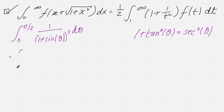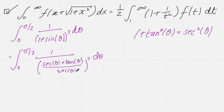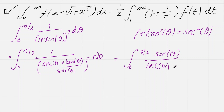Let's write the integral from 0 to π/2. We can write (1 + sinθ) as (secθ + tanθ)/secθ, because secθ/secθ = 1, and tanθ/secθ = (sinθ/cosθ)/(1/cosθ) = sinθ. So the integral becomes the integral from 0 to π/2 of secθ/(secθ + tanθ)³ dθ.